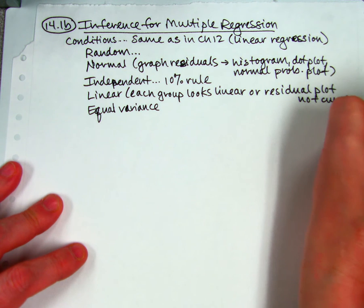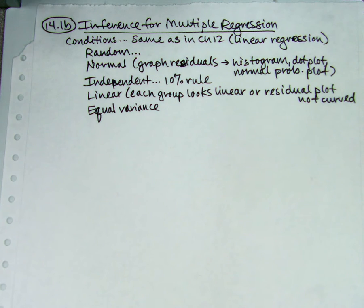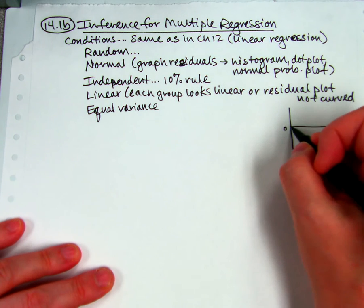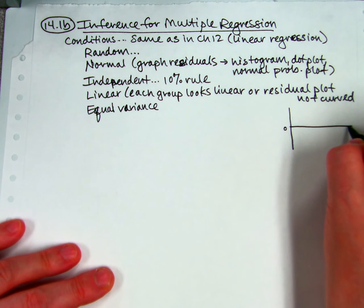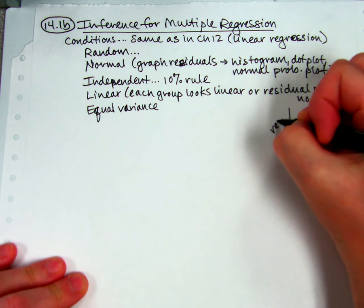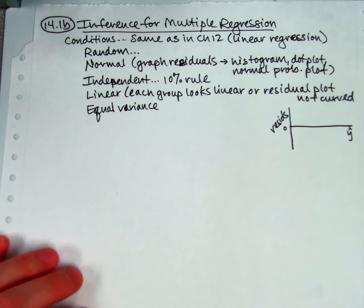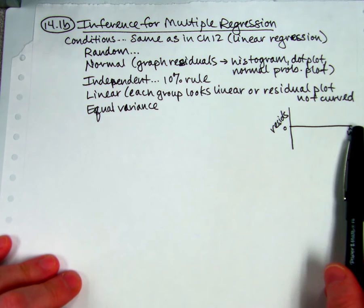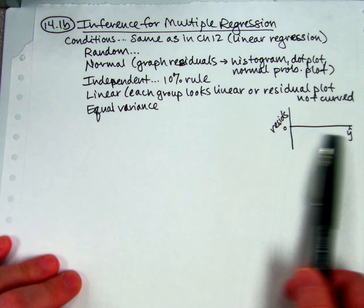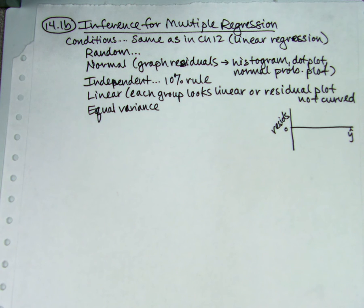Or you could look at a residual plot and see if there's no pattern in the residual plot. Not curved. There is something different about residual plots in this, when you're dealing with multiple regression. We still have zero here and above and below zero, but usually you can't really put x on the x-axis because you've got two different x's. What they usually do is they put y hat there. They put the predicted y values on the x-axis, and then the residuals on the y-axis. And what you're looking for is exactly the same as what you'd be looking for before.